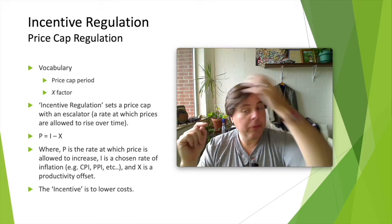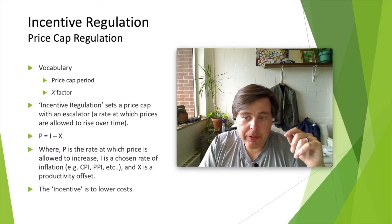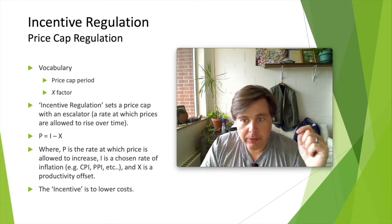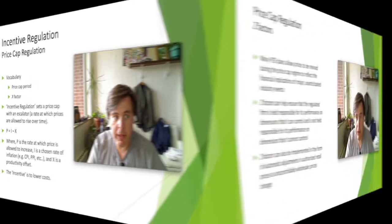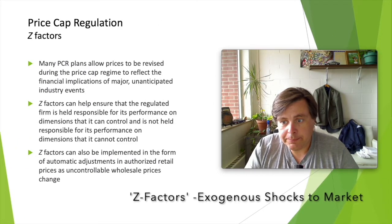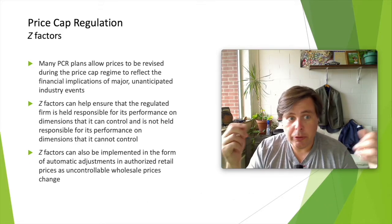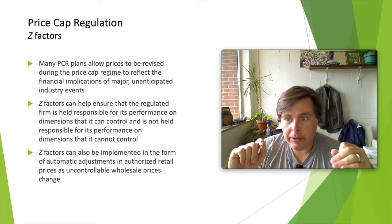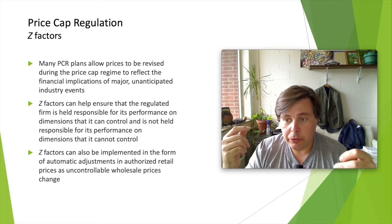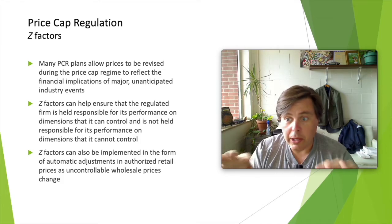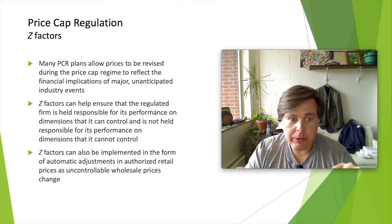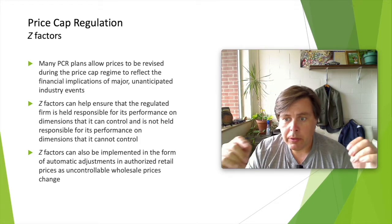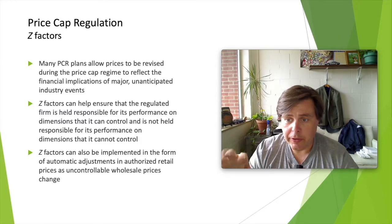We're also going to allow for what the textbook calls X factors, which can take a variety of forms — for example, productivity offsets: if there are gains in productivity, prices can adjust accordingly. Z factors are other elements built into the regulatory structure that allow for adjustments. For example, if a natural disaster knocks down power lines, the regulator might allow emergency capital investment to restore power without going through the normal processes, though that might require passing on higher costs to consumers in the short run. Generally, you build in safeguards to ensure the firm can continue to operate profitably even in adverse environments.